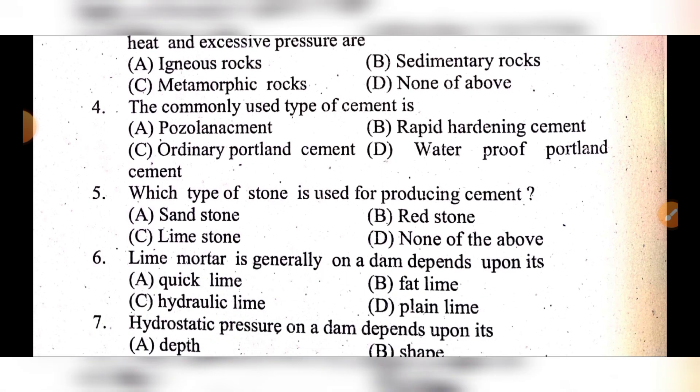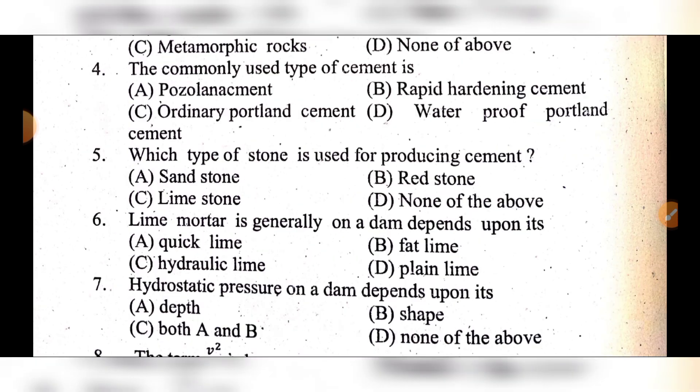Question 5: Which type of stone is used for producing cement? Option A: sandstone, option B: ready stone, option C: limestone, option D: none of the above. The answer is option C: limestone.